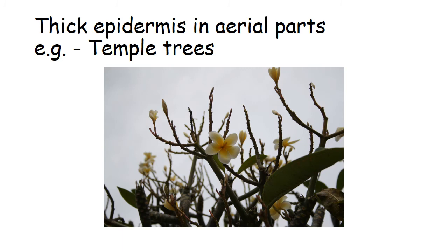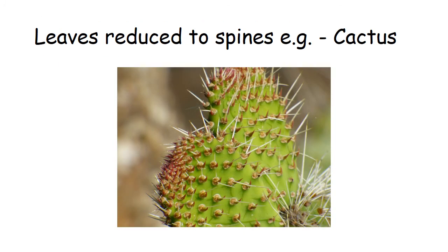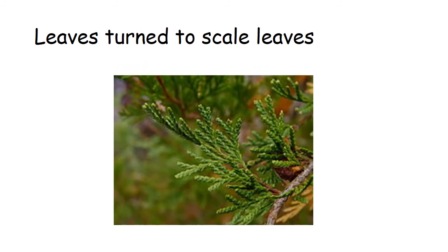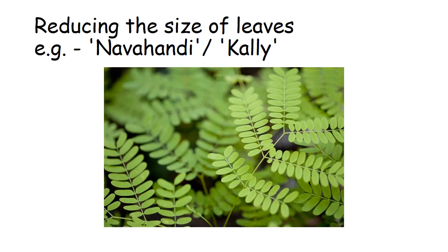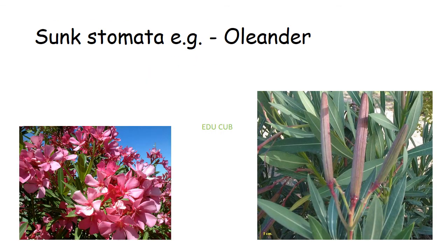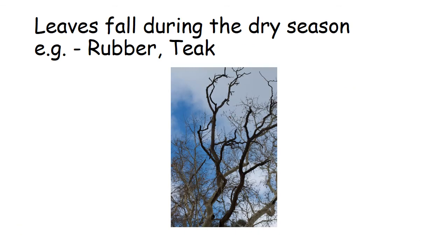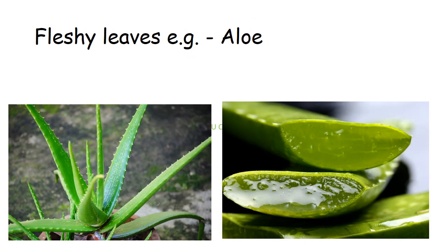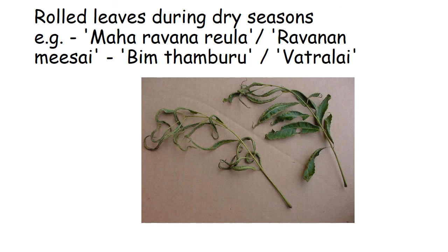First, thick epidermis in aerial parts — seen in temple trees. Second, leaves reduced to spines — example, cactus. Third, leaves turn to scale leaves — example, Kasa. Fourth, reduction in the size of leaves — example, Navahandi. Fifth, hairs on the epidermis — example, sunflower and pumpkin. Sixth, sunken stomata — example, coriander. Seventh, leaves fall during the dry season — example, rubber or teak. Eighth, fleshy leaves — example, aloe vera. Ninth, rolled leaves during dry season — examples include Maharavana, Ravla, and Bhimthamburu.